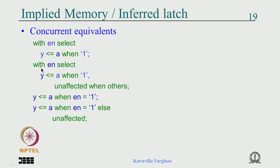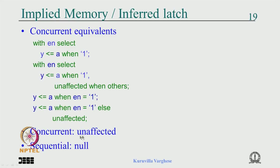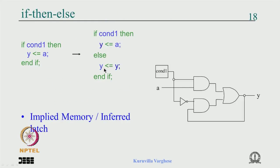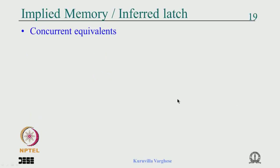The same effect can occur with concurrent statements. With 'with enable select y gets a when 1' without specifying anything else, it means y gets a when 1 and y when 0 — a latch. Similarly, saying 'unaffected when others' remembers the previous value. In sequential code, 'null' plays the same role as 'unaffected' in concurrent statements.